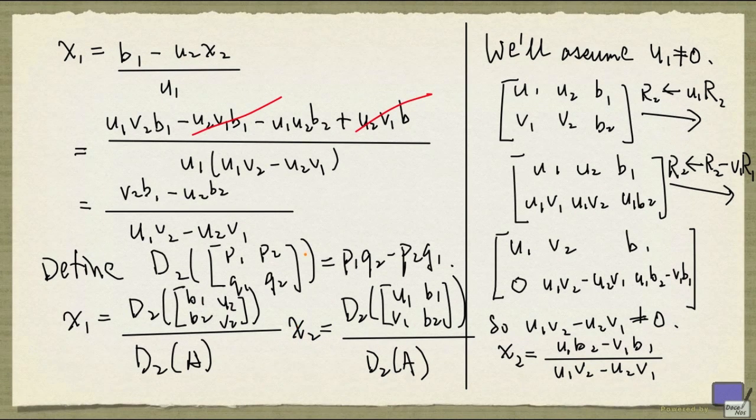Now, the thing is, you can actually go the other way. If you are just given the system Ax equal to b, if this quantity, d2 of A, turns out to be non-zero, you can actually show that x1 given by this, and x2 given by this, is the unique solution to the system. And as a result, what you can conclude is that the system Ax equal to b has a unique solution if and only if d2 of A is non-zero.